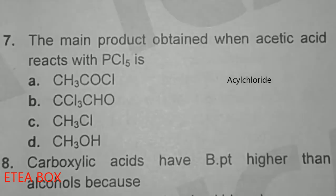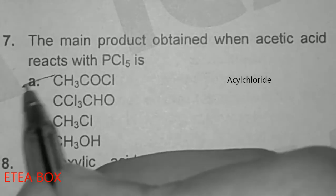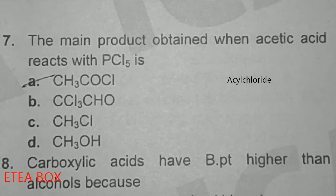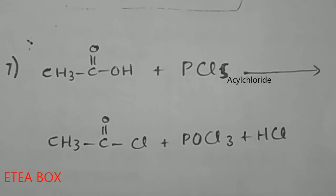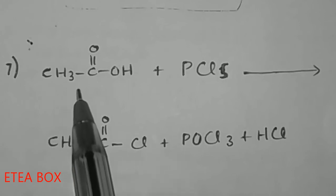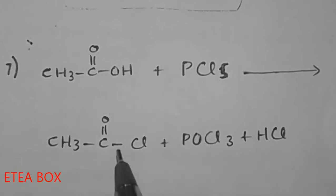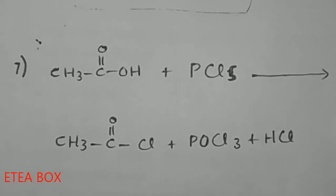The main product obtained when acetic acid reacts with PCl₅: this reaction gives CH₃C=OCl — option A. When carboxylic acid or acetic acid reacts with PCl₅, it gives acyl chloride plus POCl₃ plus HCl. Option A is correct.